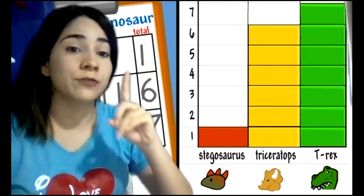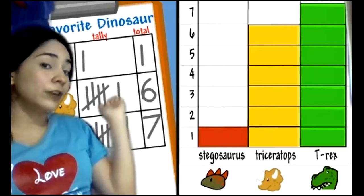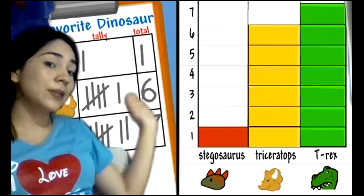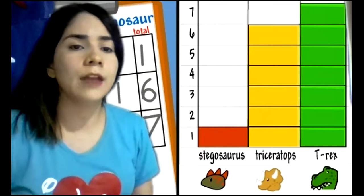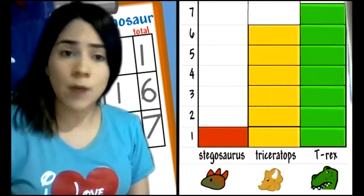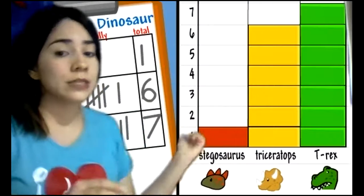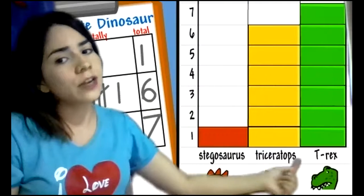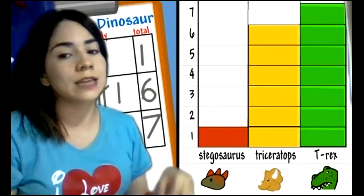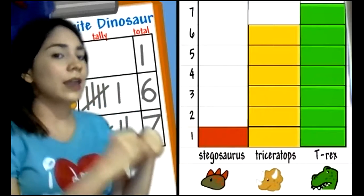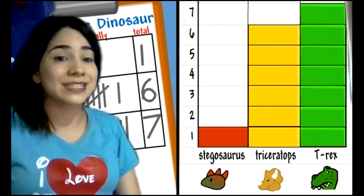So what is the first thing that you do — the picture graph or the block graph? First, you have to ask. And to ask, you have to make the pictogram first. For example, Andrea, what's your favorite dinosaur? Stegosaurus, triceratops, or T-Rex? If Andrea says T-Rex, I'm going to put a tally in the pictogram.